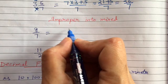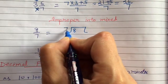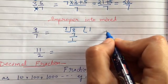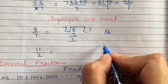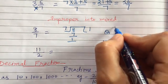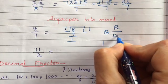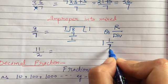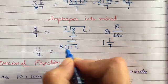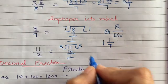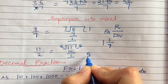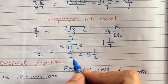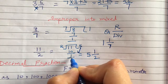The next thing is reverse conversion — converting improper fraction to mixed fraction. For this we divide. So 8 by 7: 7 goes into 8 one time. Quotient is 1. So it becomes quotient, then remainder upon divisor — that is 1 and 1 upon 7. The denominator remains 7. Another example: 11 by 2 — 2 goes into 11 five times giving 10, remainder 1. So it is 5 and 1 upon 2. We go clockwise: first 5, then 1, then 2.